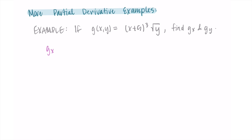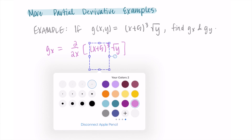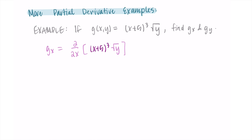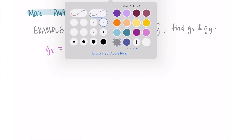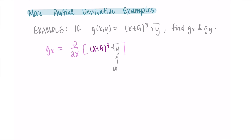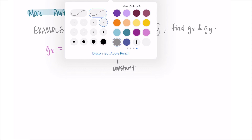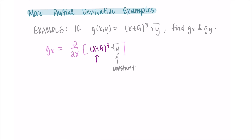Let's do the derivative with respect to x first. We're taking the partial derivative with respect to x of x plus 5 quantity cubed times the square root of y. When we're looking at the derivative with respect to x, we want to consider the things with x as the variables, and anything with just a y is a constant. So this square root of y is just like multiplying by some constant.